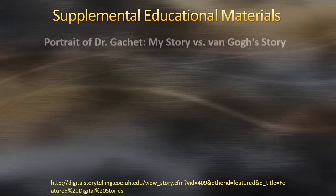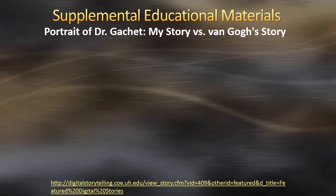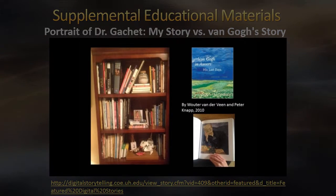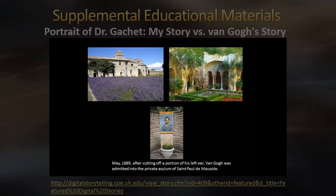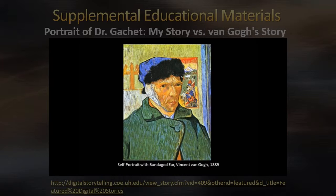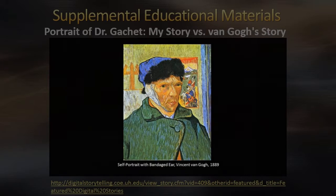This digital story presents the history and meaning of a famous painting by Vincent Van Gogh, The Portrait of Dr. Gachet. Here is a short excerpt of the digital story. To make sense of the portrait, I must briefly describe what occurred in Van Gogh's life a year before the painting was created. In May 1889, after cutting off a portion of his left ear, Van Gogh was admitted into a private asylum, St. Paul de Mazel. The literature is not clear on what drove him to cut off his ear, but it is thought he suffered from epilepsy, melancholy, and/or manic depression.